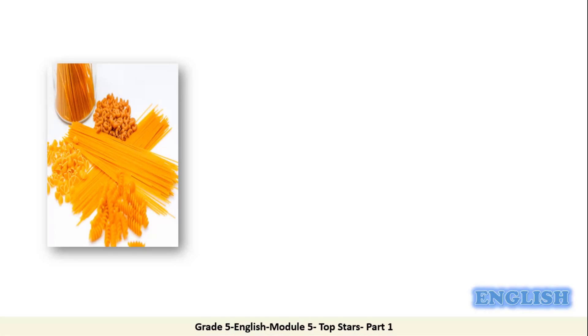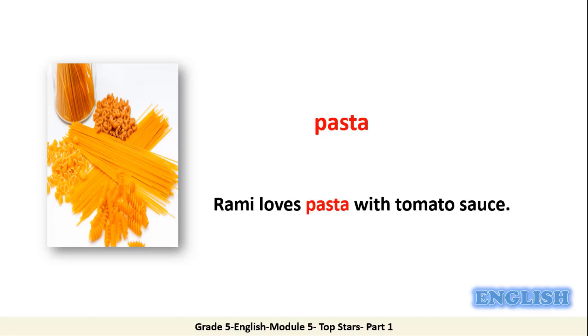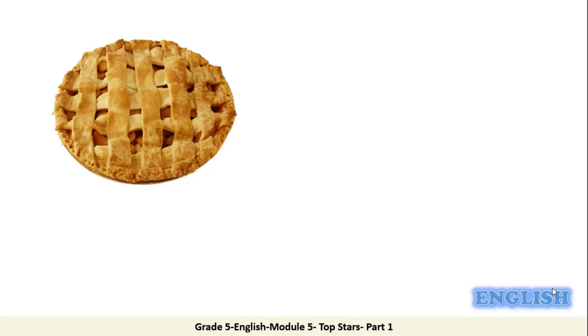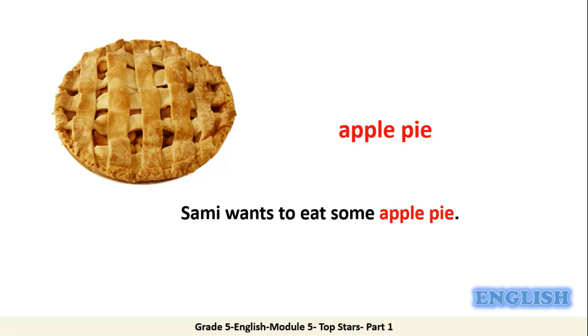Now look at this picture. I think many people like this food — we eat it with sauce. So what do we call it? It is pasta. Rami loves pasta with tomato sauce. Which part of speech is the word pasta? It is a noun. Now look at this kind of food. It is a sweet food made from apples. So what is it? It is apple pie. Sammy wants to eat some apple pie. Which part of speech is apple pie? It is a noun.